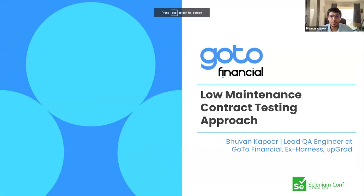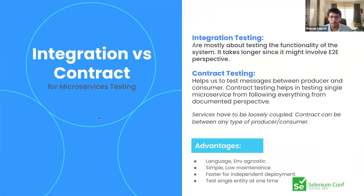Next person is Bhuvan. Hi, thanks for this opportunity. I'm Bhuvan Kapoor, Lead QA Engineer at Go-To Financial. I'll walk you through a low-maintenance contract testing approach — it's more of a quality delivery-related process than a demo. Integration test vs contract test: during integration testing we test the integrity of the system from a functional perspective, whereas in contract testing it's the interaction between services that is under test — making sure they adhere to the basic set of expectations set for those contracts.